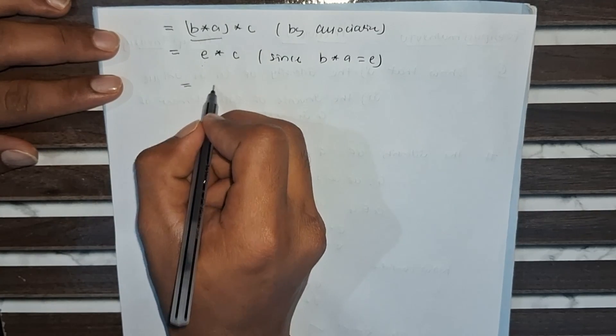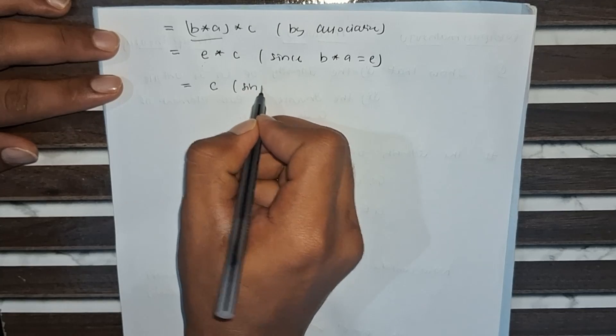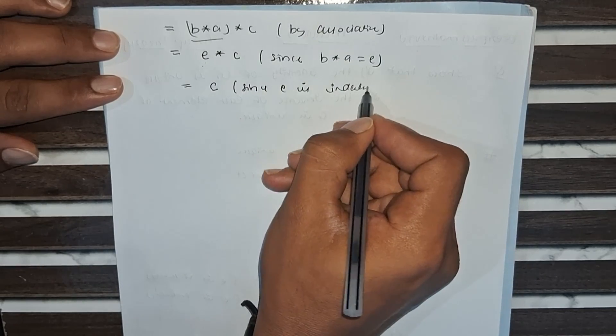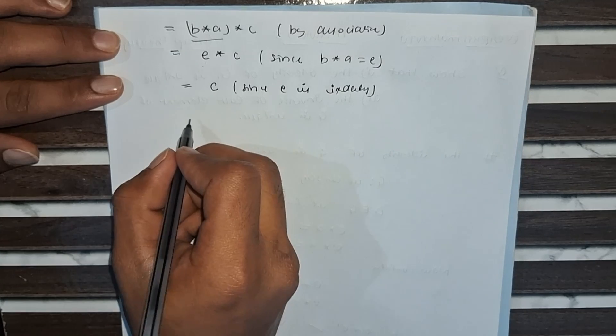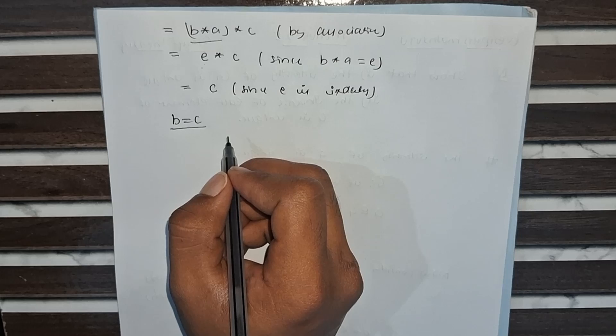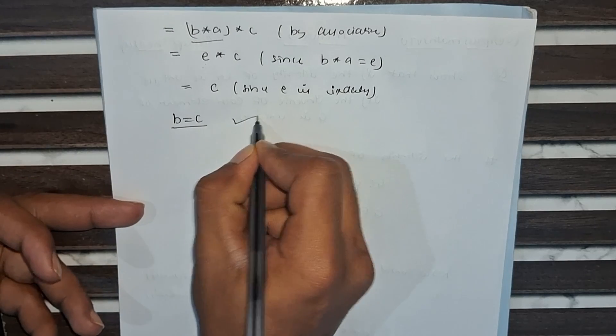So it is nothing but E times C, which equals C since E is identity. Hence B equals C, so the inverse is unique for each element in this group. Hence proved.